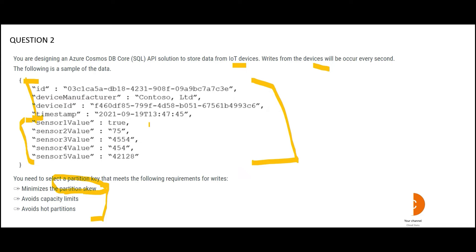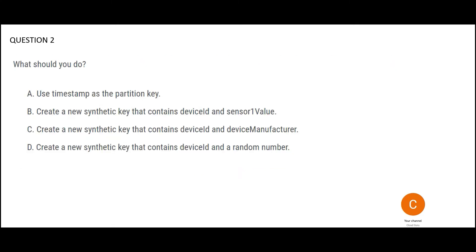The requirement says to minimize partition skew, meaning all partitions should be roughly equal in size. Using timestamp increases skew, not decreases it. Device ID is a strong candidate because device IDs are unique, allowing data to be partitioned and grouped per device across many IoT devices. Option A — using timestamp as partition key — is wrong because it will not decrease skew; it will make one partition very large if all data arrives at once.